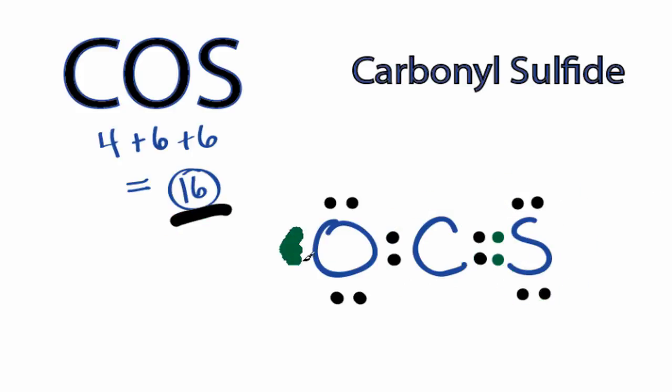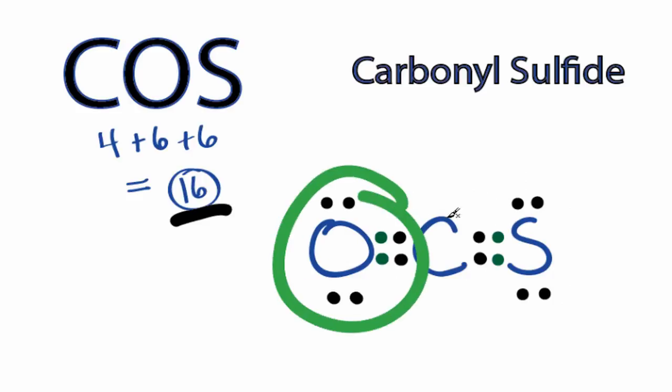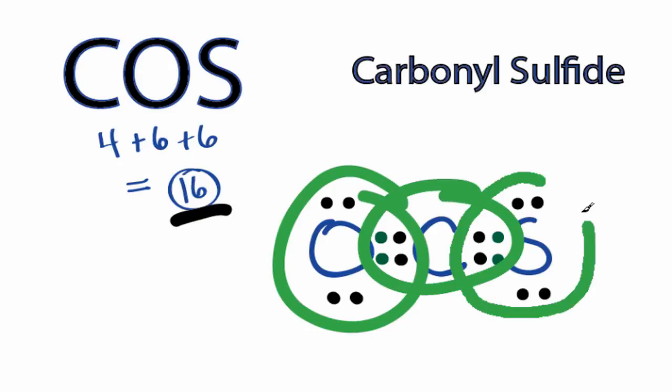Let's share these two here from the oxygen with the carbon. So now, by sharing, we have 8 on the oxygen and 8 on the central carbon. Sulfur still has 8, and we're only using 16 valence electrons.